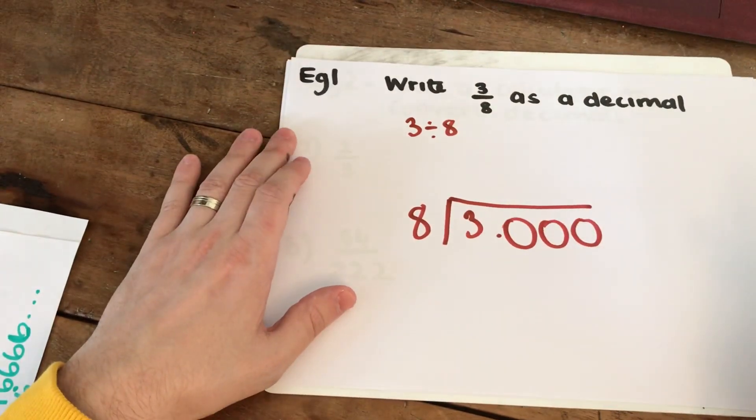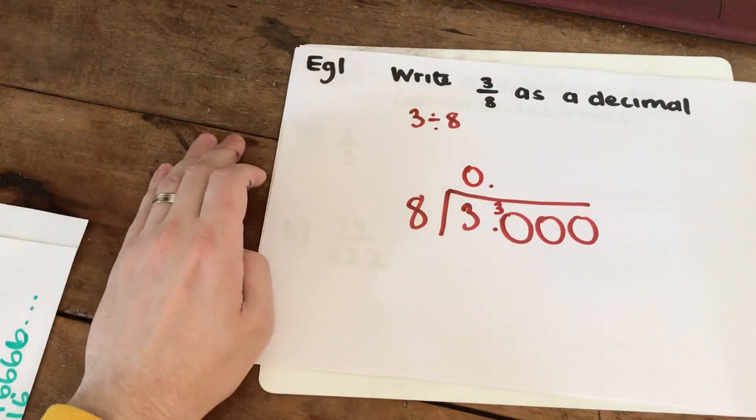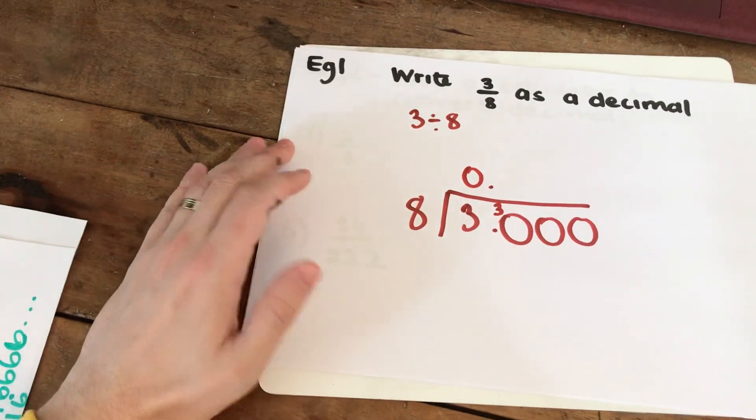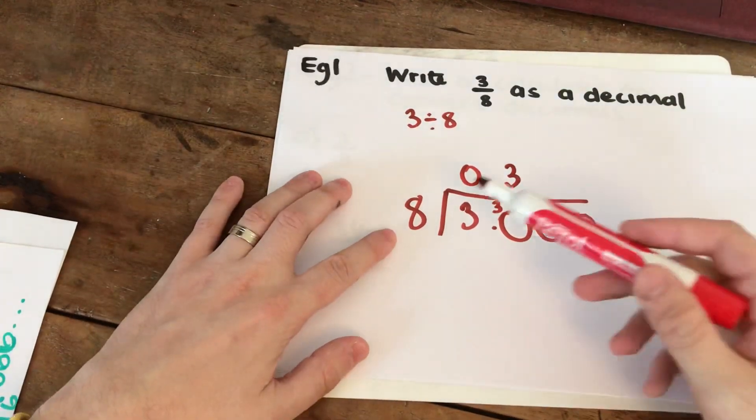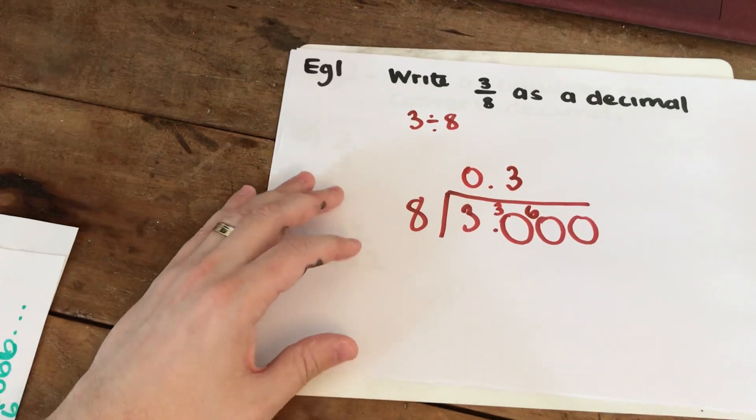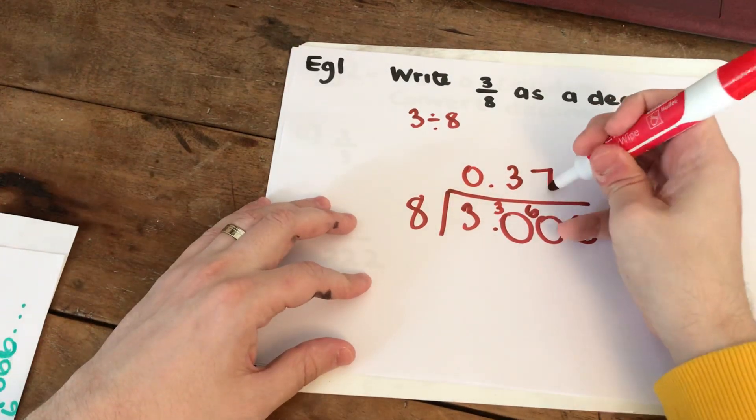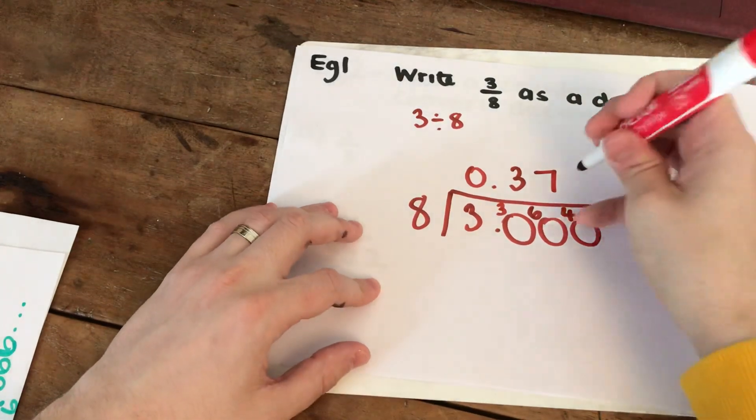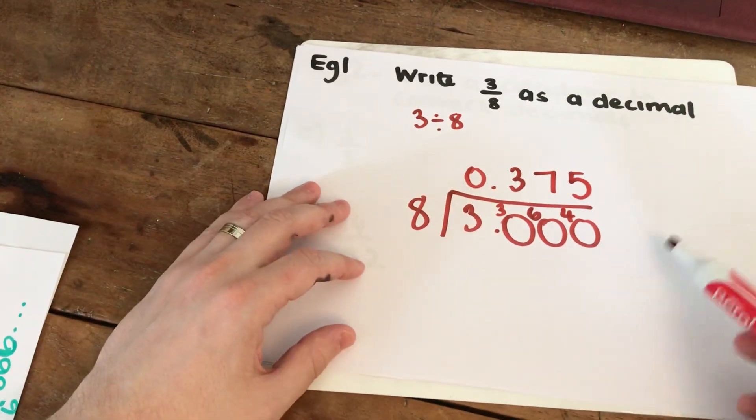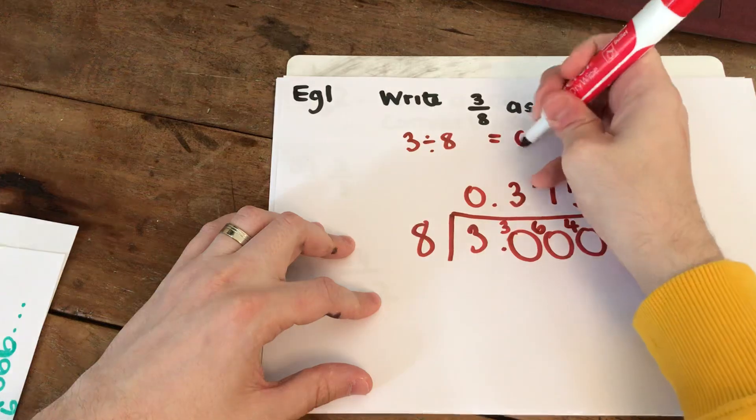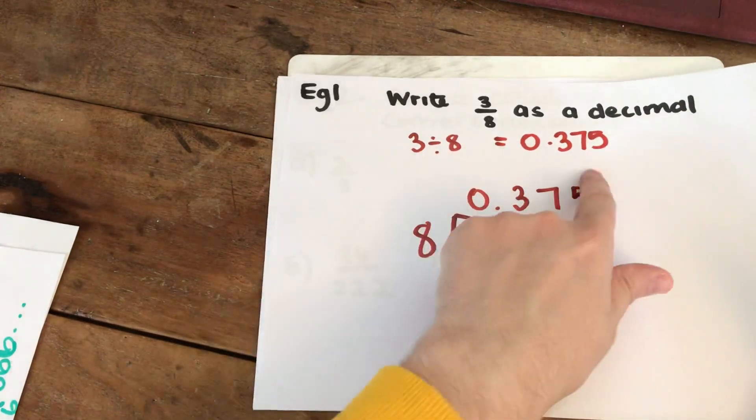So we say, how many times does 8 go into 3? It goes in zero times with 3 remainders. Then, how many times does 8 go into 30? 8 times 3 is 24, so it goes in 3 times with 6 remainders. How many times does 8 go into 60? 8 goes into 60 seven times because 8 times 7 is 56. So 7 with 4 remainders, and then 8 times 5 is 40, so there are no remainders. This is where you would stop. And we write our answer as 0.375.